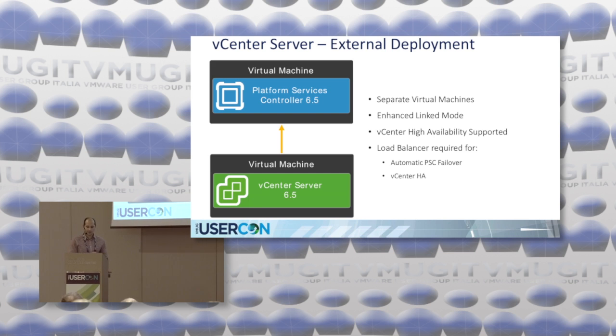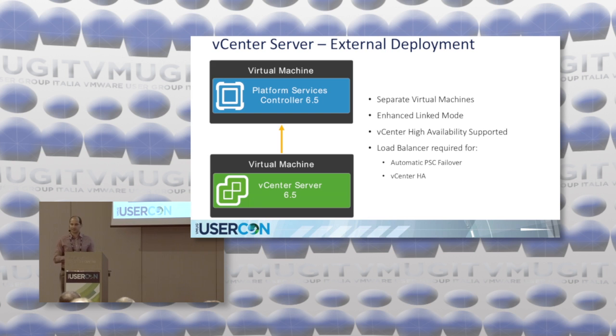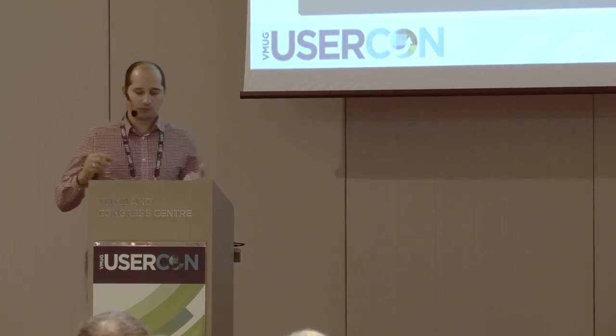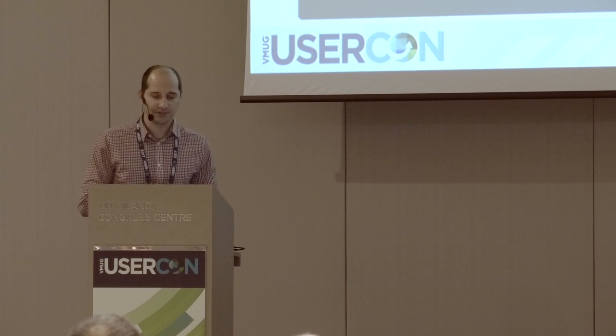The second most popular deployment is the vCenter Server with external PSC — two virtual machines, with the vCenter Server and PSC connected. This allows better resilience of the PSC. You can put a load balancer between both machines and use enhanced link mode. All those features come into play.